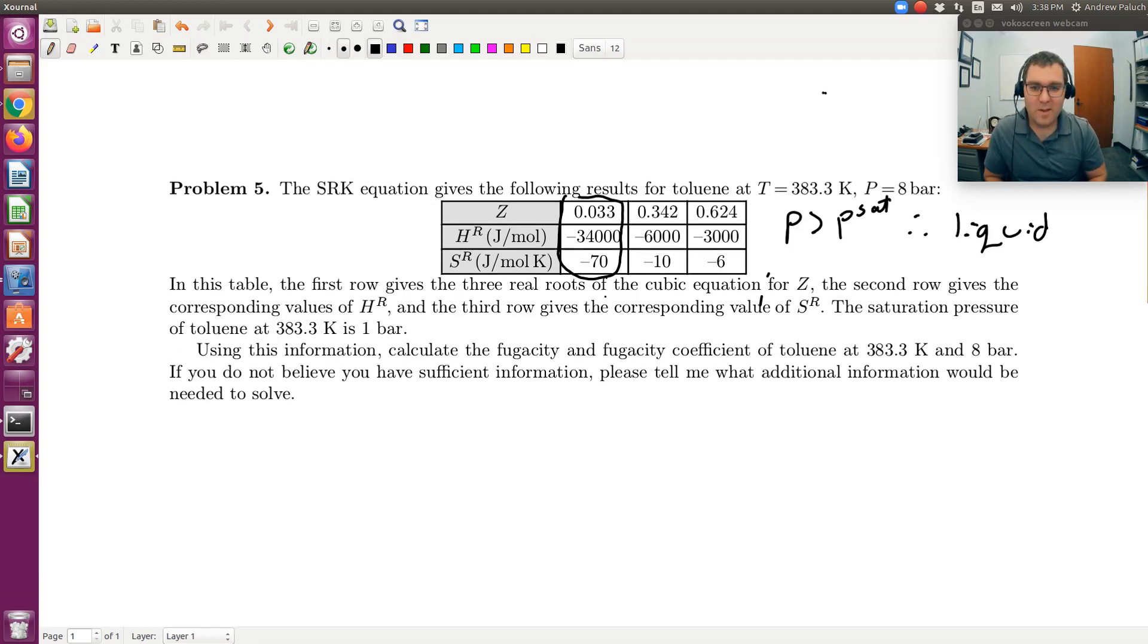The key here is we're asked to get fugacity coefficient and fugacity, but we're given HR and SR. What we need to do is remember the link between them. Since I need fugacity and fugacity coefficient, I'm going to go back and work these expressions up, because there's not too much to them.